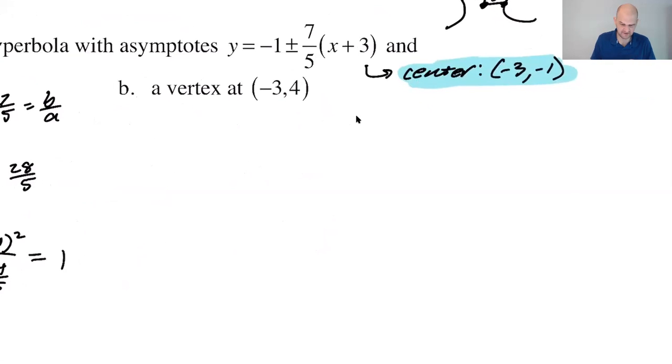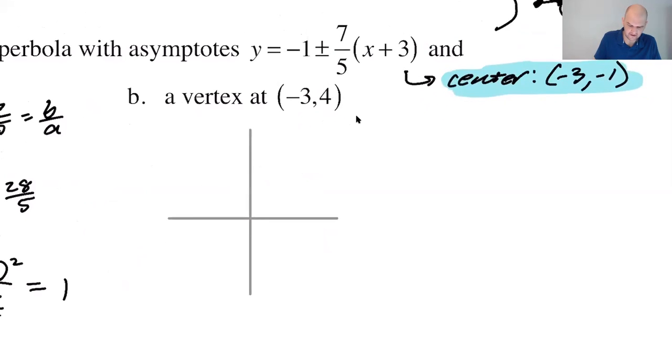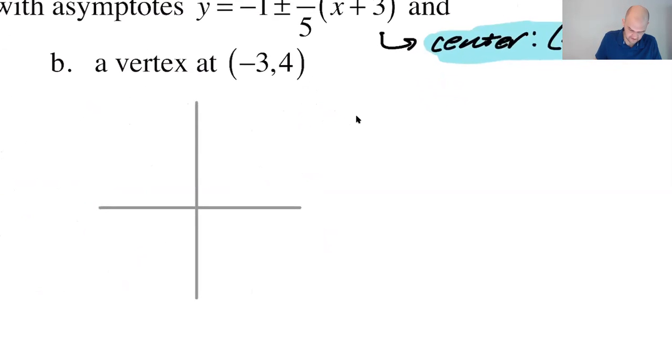Let's try this one. It can be the same idea. So I'm going to draw my potential transverse and conjugate axes just to make life easier for plotting our points and stuff. The center has to be the intersection of those. So it's gotta be (-3, -1), a vertex at (-3, 4). So that's a vertex.